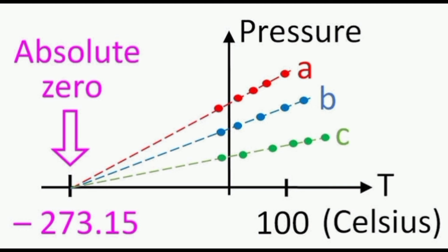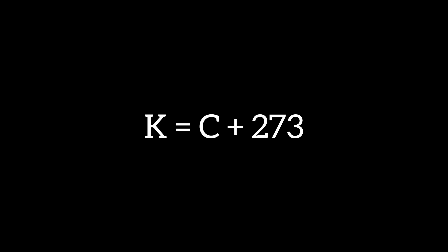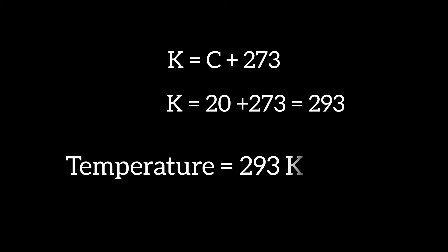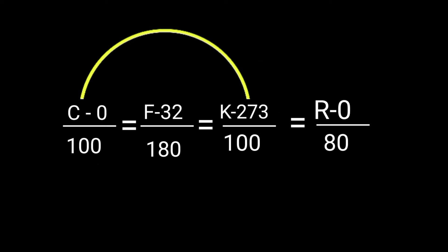Now to convert this into Kelvin scale, we can just add 273 which is equal to 293 Kelvin. Or we can just use this formula.